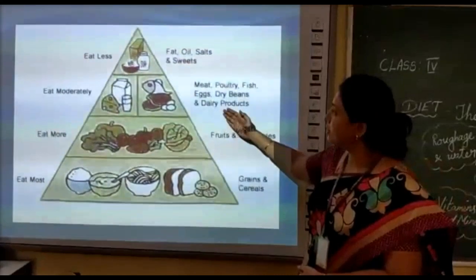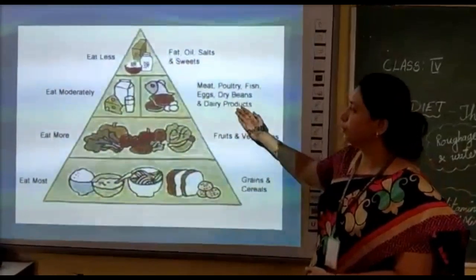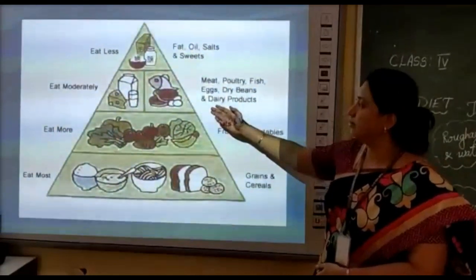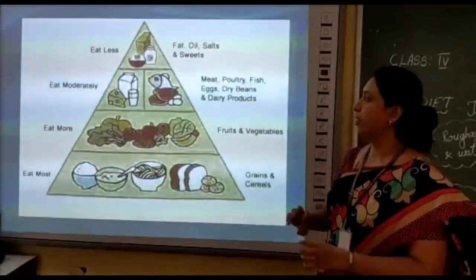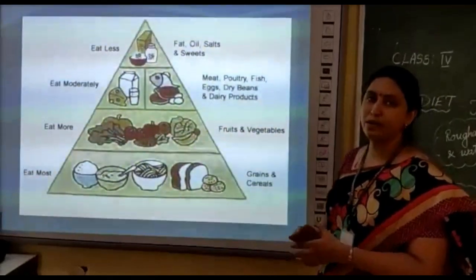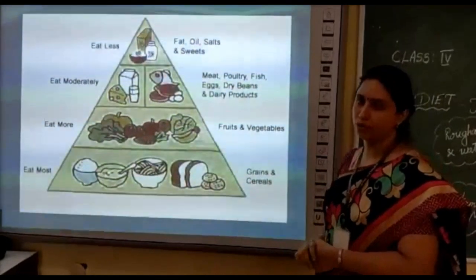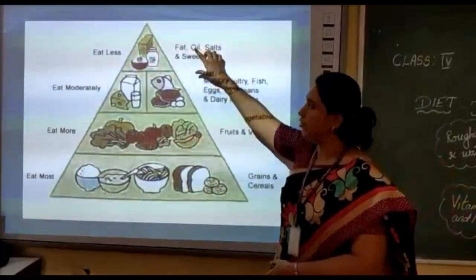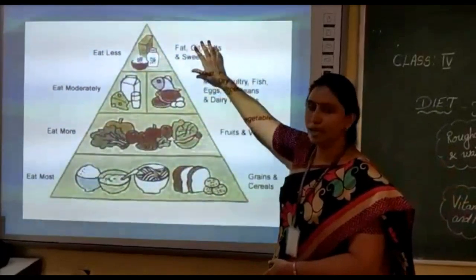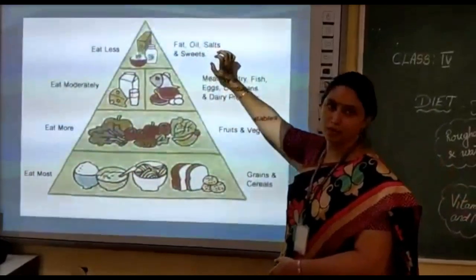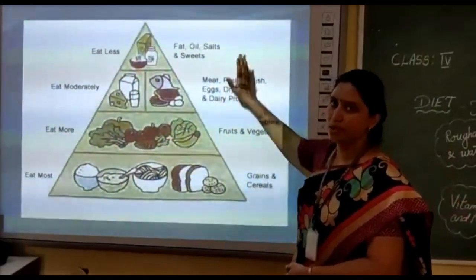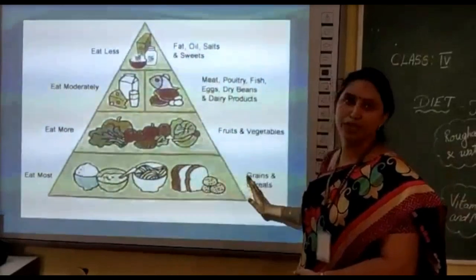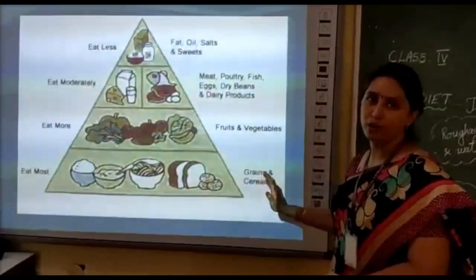The items rich in protein, like poultry, eggs, and meat, we have to take in a moderate amount. And the items at the top of the pyramid we have to take in a lesser amount — that is fats. This is the food pyramid which we have to follow.